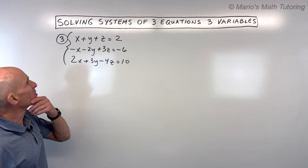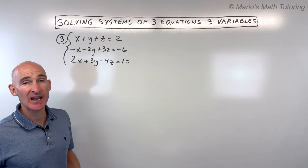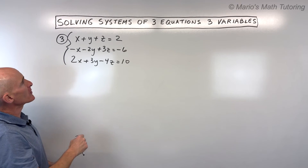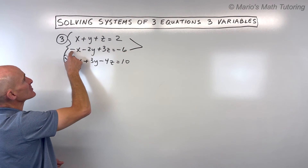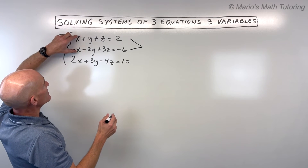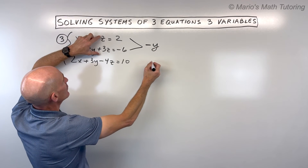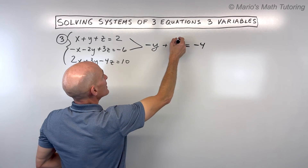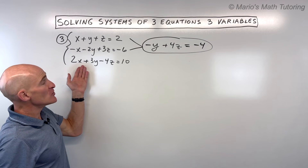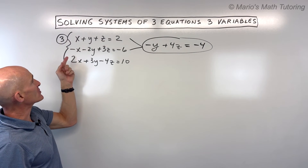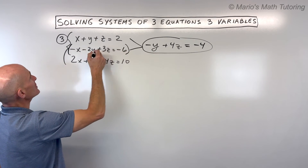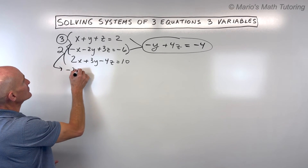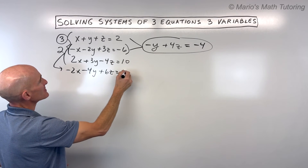For number three, we want to eliminate one of the variables — x, y, or z. I think the x's might be a little bit easier to work with. Adding the first and second equations: 1x plus negative 1x is zero, those cancel. 1y plus negative 2y gives negative y. 1z plus 3z gives 4z. And 2 plus negative 6 is negative 4. So we get negative y plus 4z equals negative 4. We didn't use equation three yet — we have to use it. I'll combine it with the second equation, multiplying equation three by 2: that gives negative 2x minus 4y plus 6z equals negative 12.